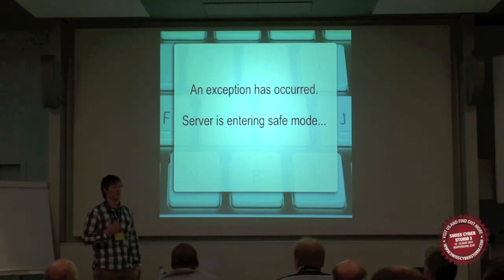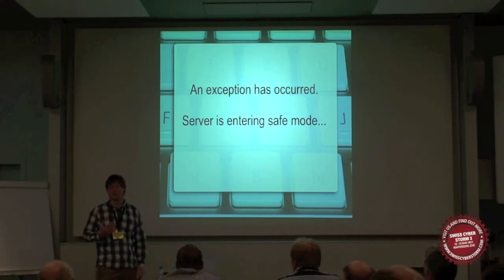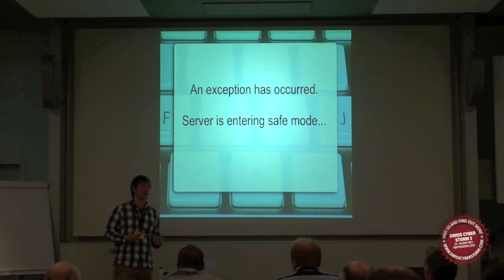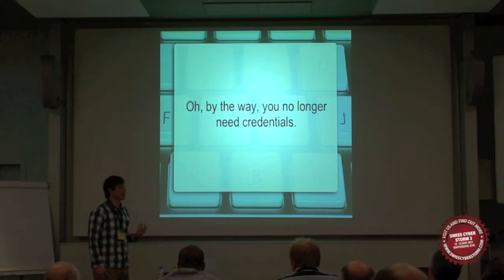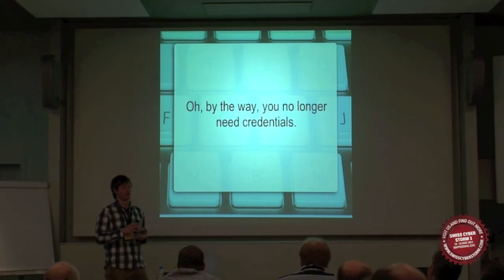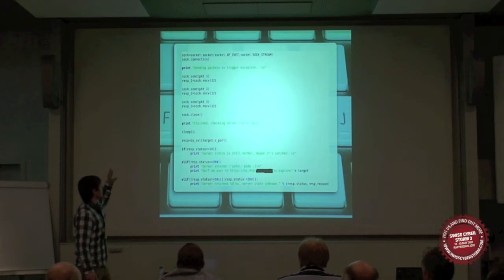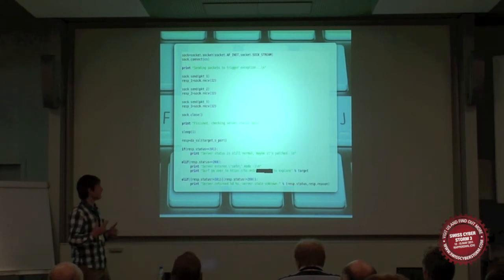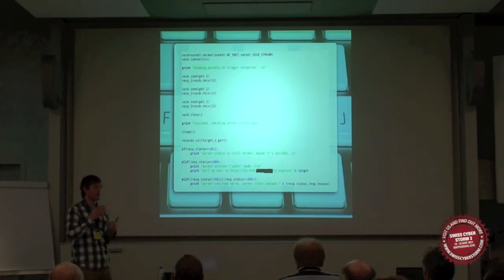Another one I was looking at — I was fuzzing it with a small mutation fuzzer I had written, and I got an exception. The server had exception handling, and when it received the exception it would go into a safe mode. Safe mode? It's not safe. By the way, you no longer need credentials. It actually had authentication in the server code, but when it triggered safe mode, it disabled authentication for anyone. The code I wrote sends three packets. The first and second I think are a handshake, and the third actually triggers the exception. You can use this code to crash the server or bypass credentials.